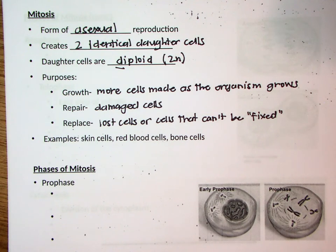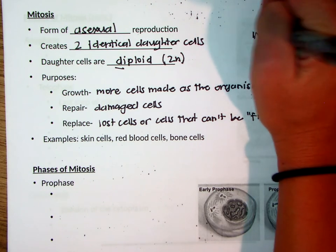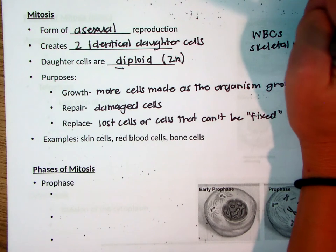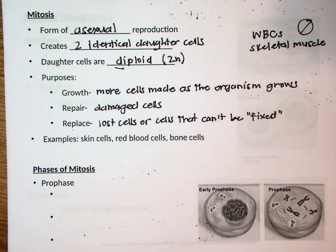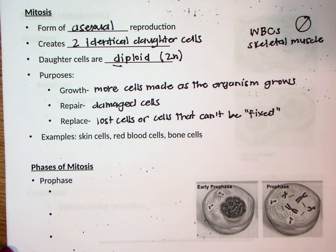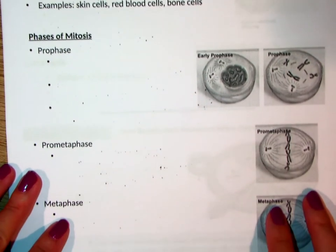White blood cells and skeletal muscle cells do not continuously undergo mitosis like other cells in the body. You may ask why — I don't know the answer to that; that's something I should look up. So mitosis is used in asexual reproduction, the daughter cells are identical and they're diploid, 2N — two sets of chromosomes in the nucleus. Let's get into the phases of mitosis.